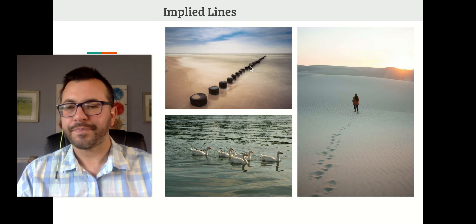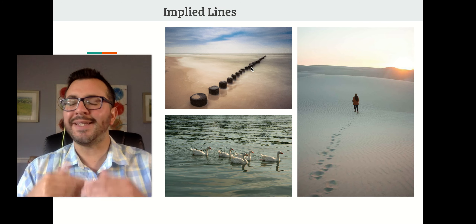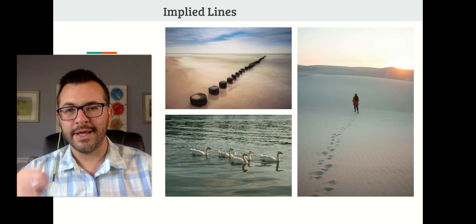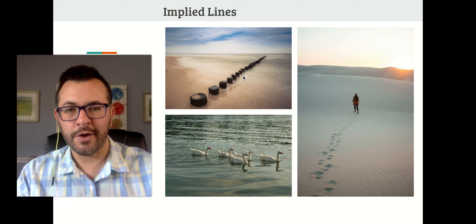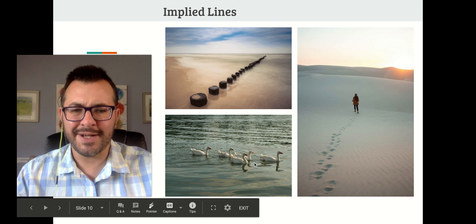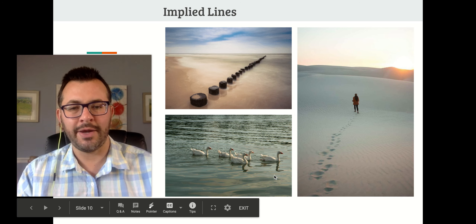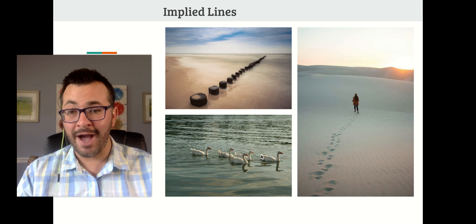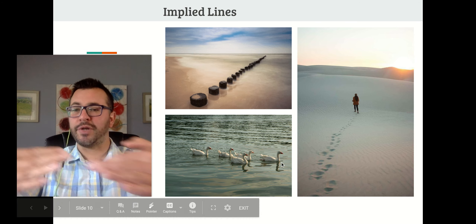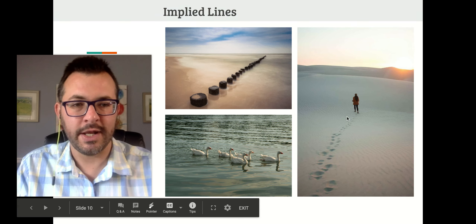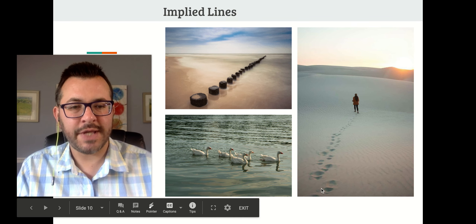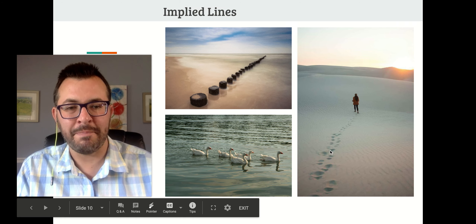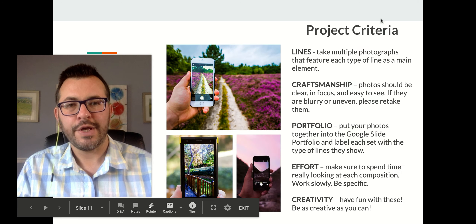The final type is implied lines. This isn't a single continuous line — instead it's individual objects, like a dotted line in nature. For example, pier posts where the individual sections suggest a line, or ducks swimming in a row making a line from left to right — not a perfect line, but giving the impression of one. A person's footsteps in the ground also imply a line you can follow.